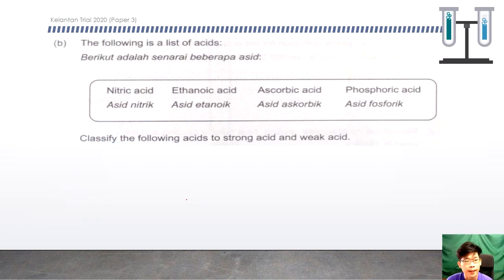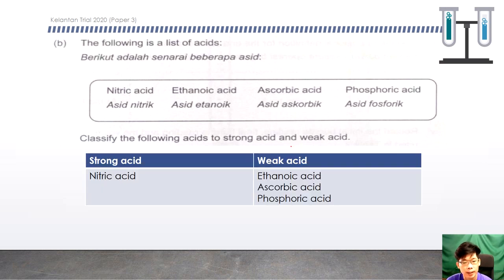Next is a classification question: classify the following acids into strong and weak acids. Strong acid: nitric acid only. Weak acids: ethanoic acid, ascorbic acid, and phosphoric acid. Do not write your answer in sentence form — it will be rejected.